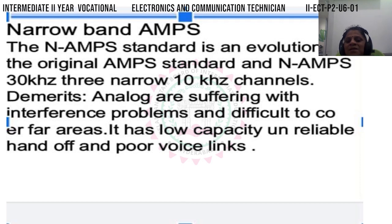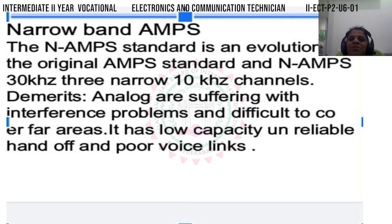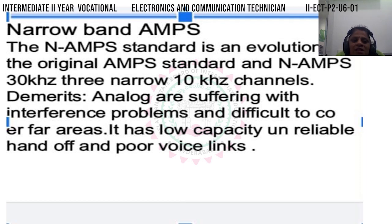AMPS is an analog signal field - an analog mobile communication system. The 10 kHz sub-band has additional external noise interference, making clarity poor. Demerits include adjacent channel frequency interference, low capacity, unreliable hand-off, and poor voice quality.